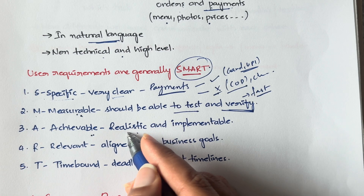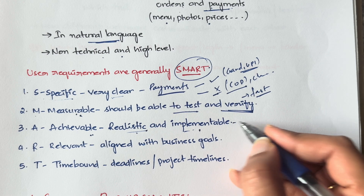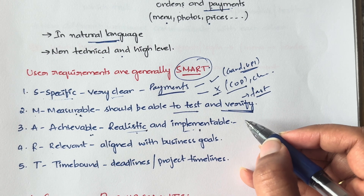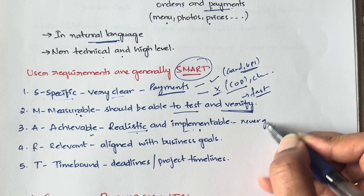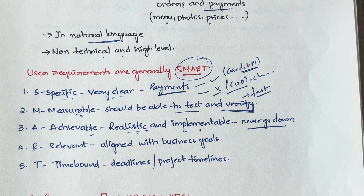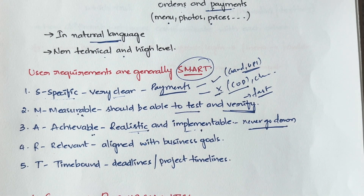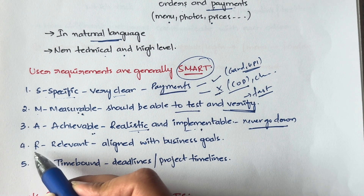A stands for Achievable — requirements should be realistic and implementable. For example, if a customer asks a developer to build a website that will never go down, that is not realistic. Even large MNCs sometimes have server crashes. We will try to minimize downtime as much as possible, but saying it should never go down is not achievable.